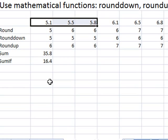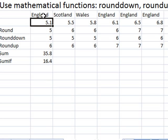We'll now look at it in a slightly different way. I've just added some labels here. England, Scotland, Wales. Let's imagine these figures are, I don't know, rainfall on a particular month. Rainfall in England, 5.1 millimeters. Rainfall in Scotland, 5.5.